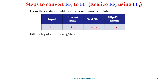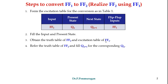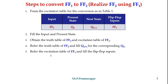The next step is to fill the input and present state. Third step: obtain the truth table of flip-flop 2 and the excitation table of flip-flop 1. The fourth step is to use the truth table of flip-flop 2 to fill Qn+1, which is the next state for the corresponding present state Qn. Then, using the excitation table of flip-flop 1, we fill the flip-flop inputs.